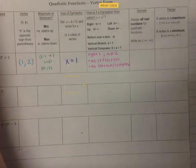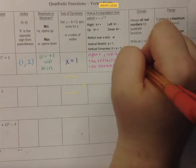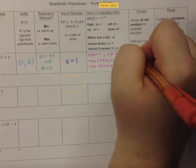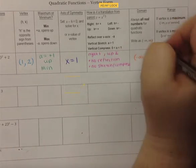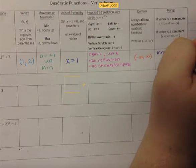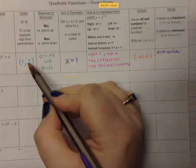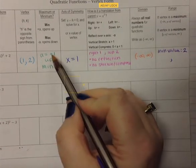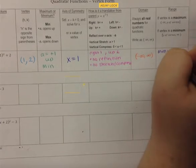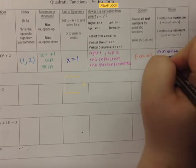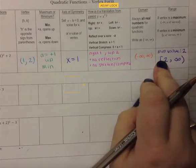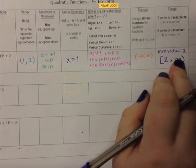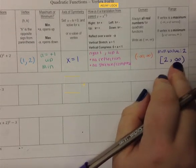The domain is as normal: negative infinity to positive infinity. Our range still comes from our vertex — it's still a minimum, so we have a minimum value of 2, because it's the y value of our vertex. We have a positive a, which means we're going to have positive infinity on the right side of the comma. So the range is [2, positive infinity). The sign on the infinity tells you whether it goes on the left or right of the comma; the number simply goes in the other spot.